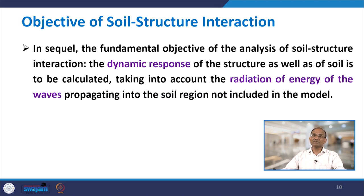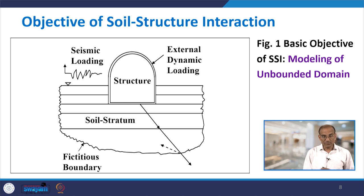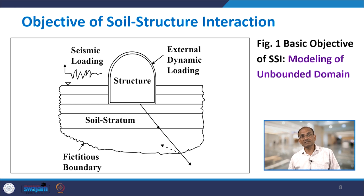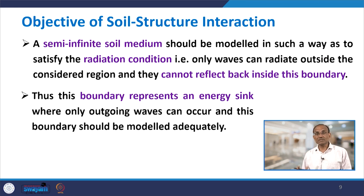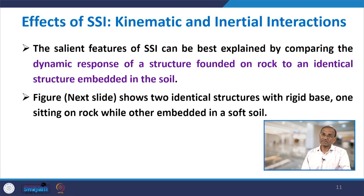The fundamental objective of SSI and dynamic response analysis is to calculate the response of both structure and soil, taking into account the radiation of energy of waves propagating into the soil region not included in the model. When you put a fixed boundary, you cut down the remaining parts of the soil — which extends to infinity horizontally and downward — and this boundary must satisfy the radiation condition and simulate the missing part of the soil. Different types of boundaries will be discussed in the next SSI lecture.